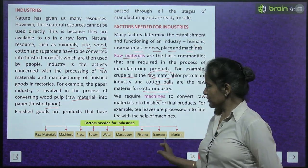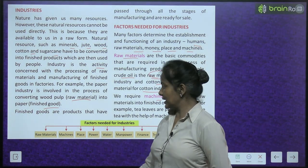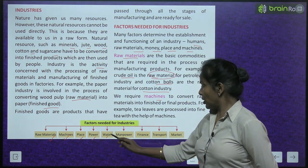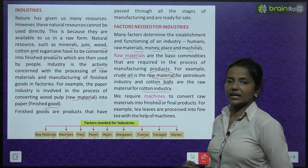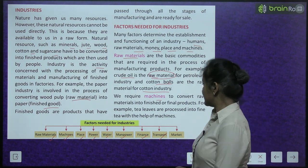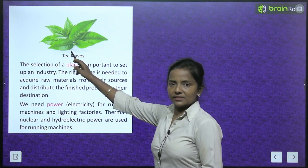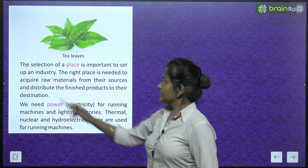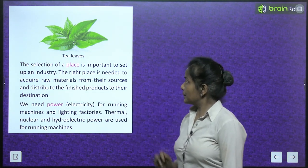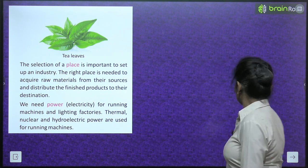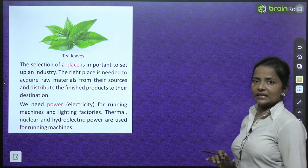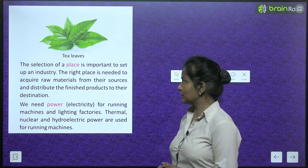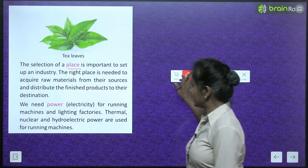The factors needed for an industry are: raw materials, machines, place, power, water, manpower, finance, transport and market. The selection of a place is important to set up an industry. The right place is needed to acquire raw materials from their sources and distribute the finished products to their destination.